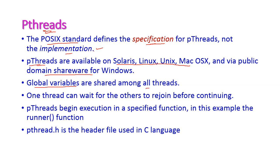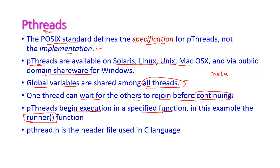In pthreads, global variables are shared among all threads. One thread can wait for another thread to rejoin before continuing — this is a speciality of pthread. pthread begins execution at a specified function, for example the runner function. So the pthread starts executing only when the runner function is called. To physically create the thread we use pthread_create, but for it to be logically created and start executing, we have to call the start function.